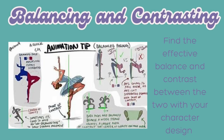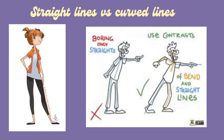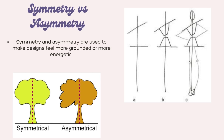Let's learn about balancing and contrasting your character's poses. Find the effective balance and contrast in your character's design so that it can be believable with their actions. Straight line versus curved lines — curved lines can help give weight and looseness to the form of your character, as straight lines can make your character look stiff and unrealistic. This is why you should play around with both straight and curved lines together. They create interesting line work for the viewer's eyes. Symmetry and asymmetry make designs feel more grounded, as you also want them to be believable for the viewer. It shows a lot in figure drawing, in the examples showcased here.